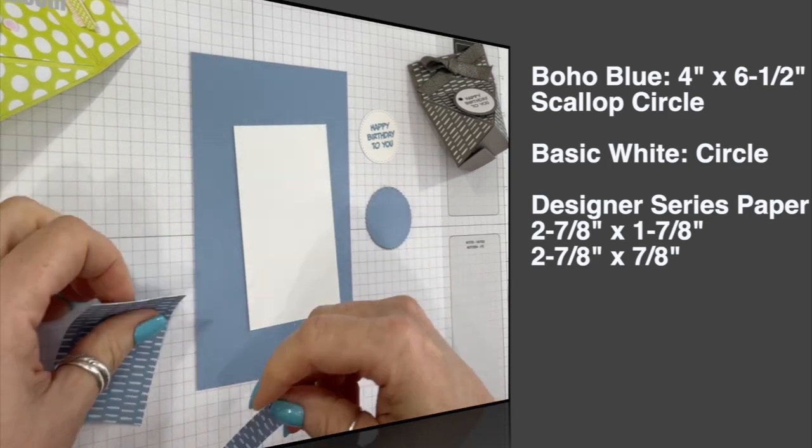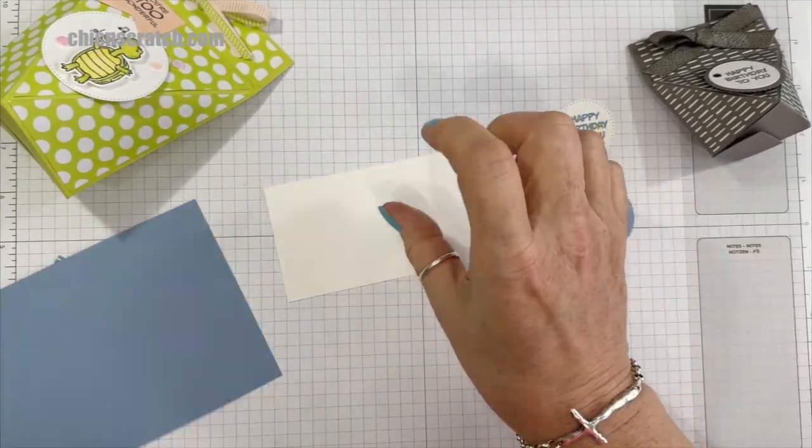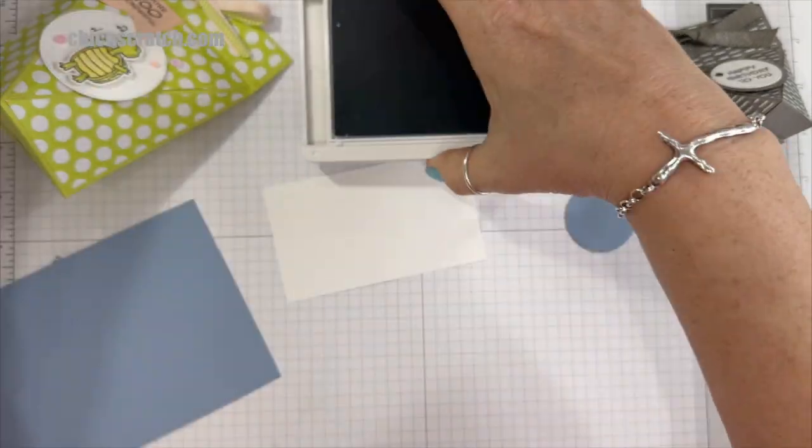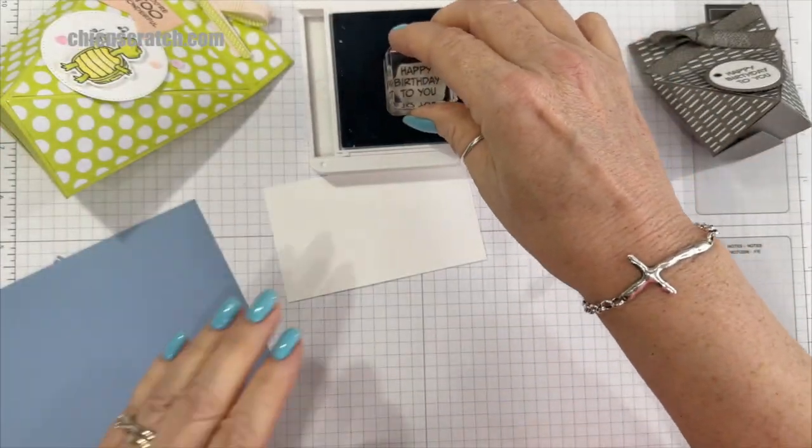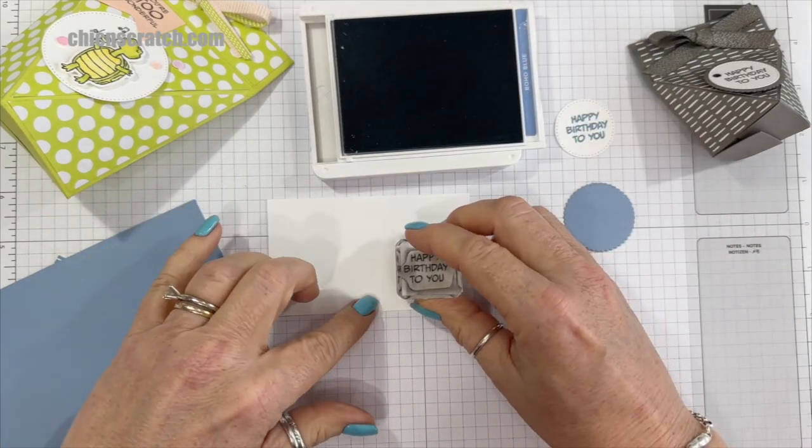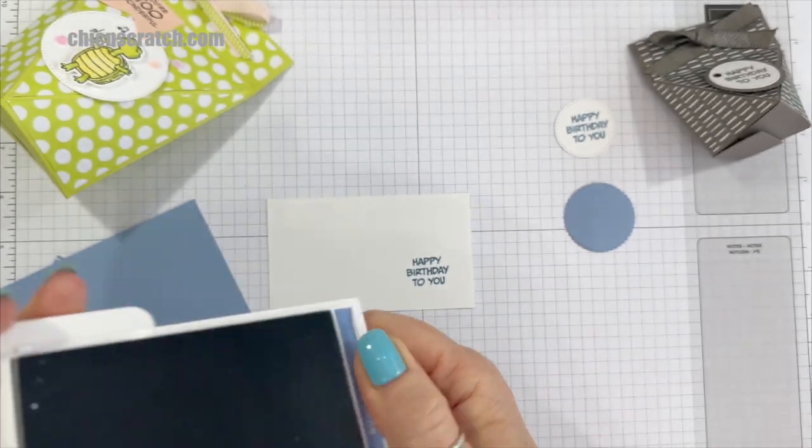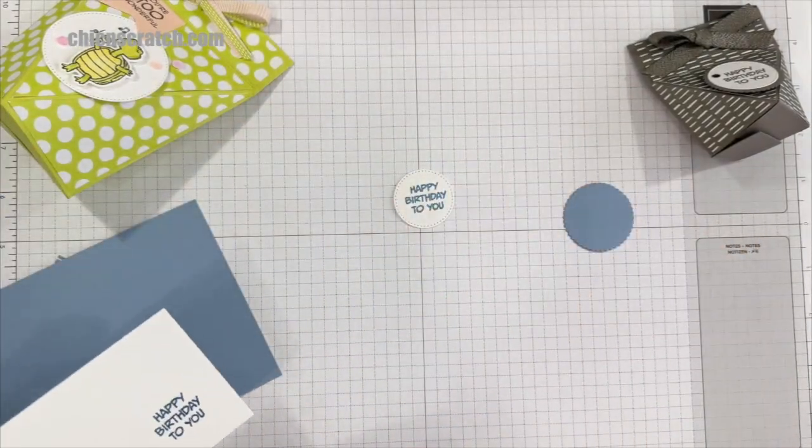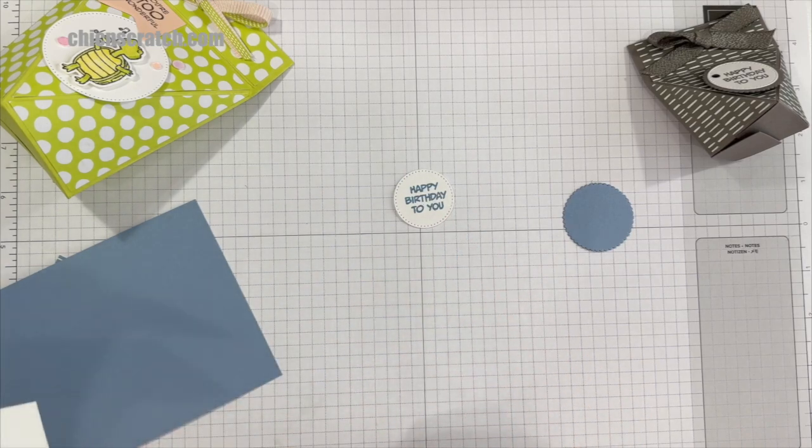Okay, so your Designer Series Paper measures two and seven eighths by one and seven eighths, and then two and seven eighths by seven eighths. Okay, so let's go ahead and stamp our image. We're using Boho Blue ink and the Zany Zoo stamp set is the one that has this birthday greeting.